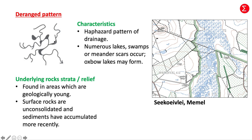The deranged pattern, as seen in the topographic map example of Siakufle, is a haphazard pattern of drainage where there are many lakes, swamps, or meander scars, and oxbow lakes may also form. The underlying rock strata: it's found in areas that are usually geologically young, meaning the surface rocks are unconsolidated and sediments have accumulated more recently.